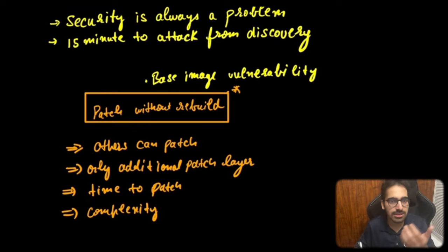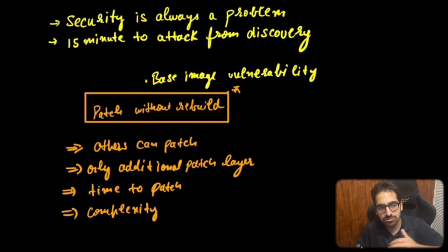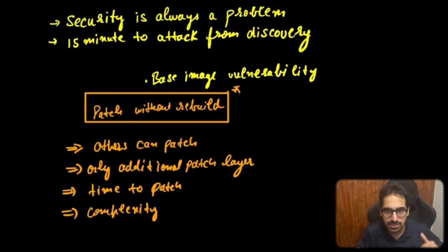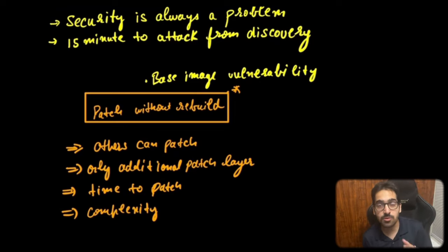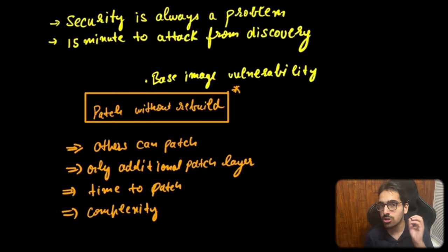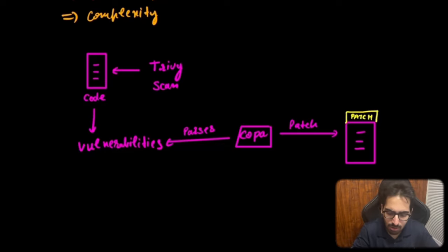Adding just a patch layer further reduces storage and transmission costs. Time to patch gets reduced — as soon as a vulnerability is found, it will be patched, keeping you safe from attacks. It also reduces the complexity of patching because you don't have to rebuild the entire pipeline or image; the tool automatically takes care of patching by adding a patch layer on top of your existing application base.